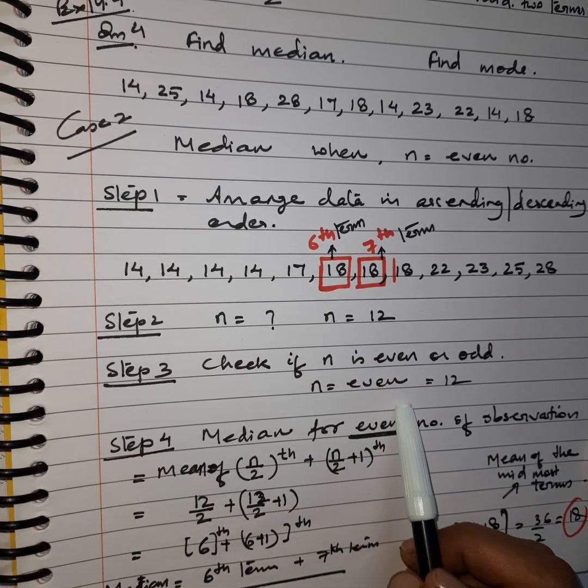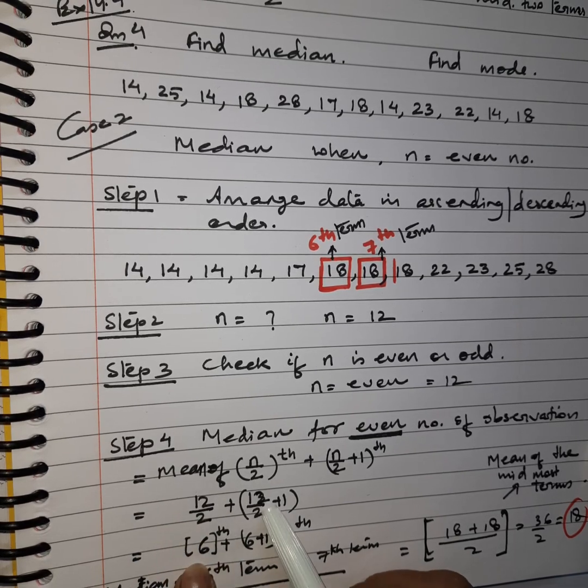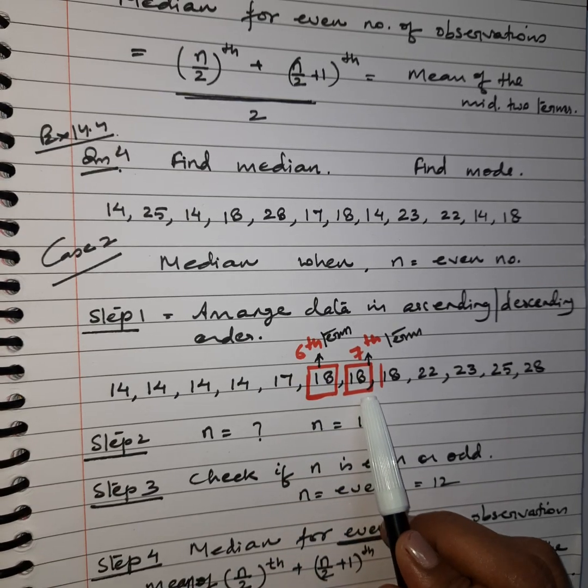So what we will get? We will get two of the middle terms here. So 12 by 2 gives you the 6th term and 12 by 2 plus 1 gives you the 7th term. This is 6th term. This is 7th term.